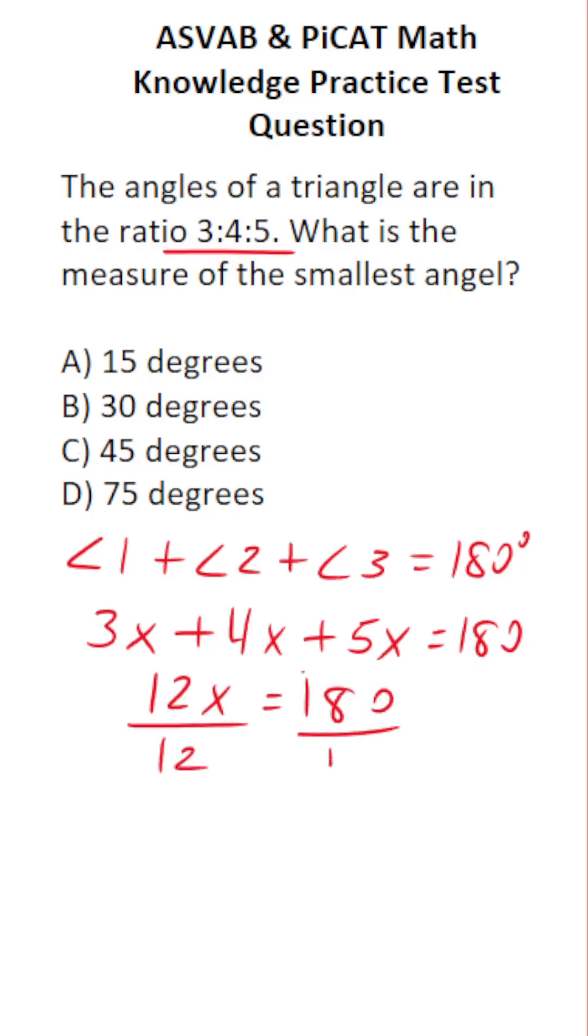Divide both sides by 12 now. This crosses out, leaving you with x on this side. You should notice that 180 and 12 have a common factor of 6. So if you can't do this one mentally, reduce it. 18 divided by 6 is 3.